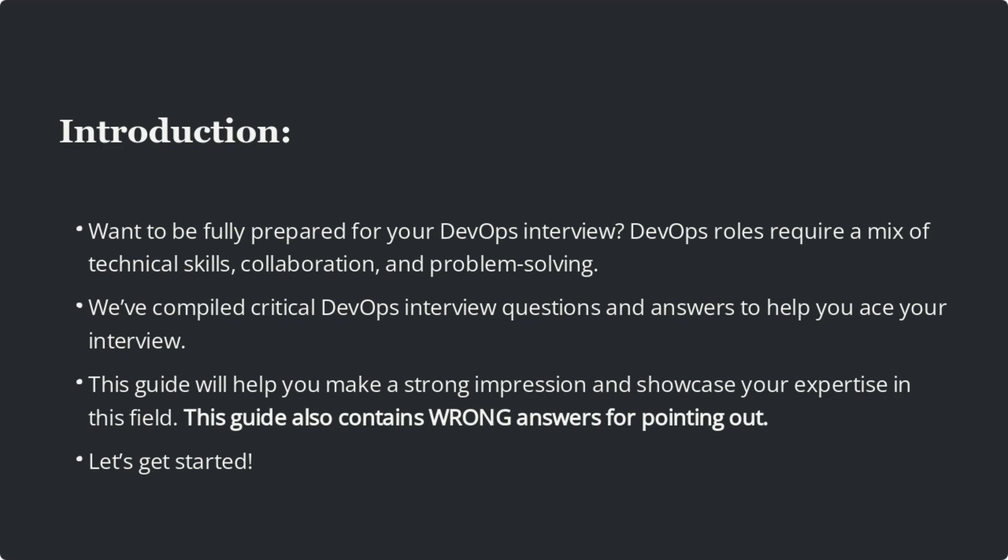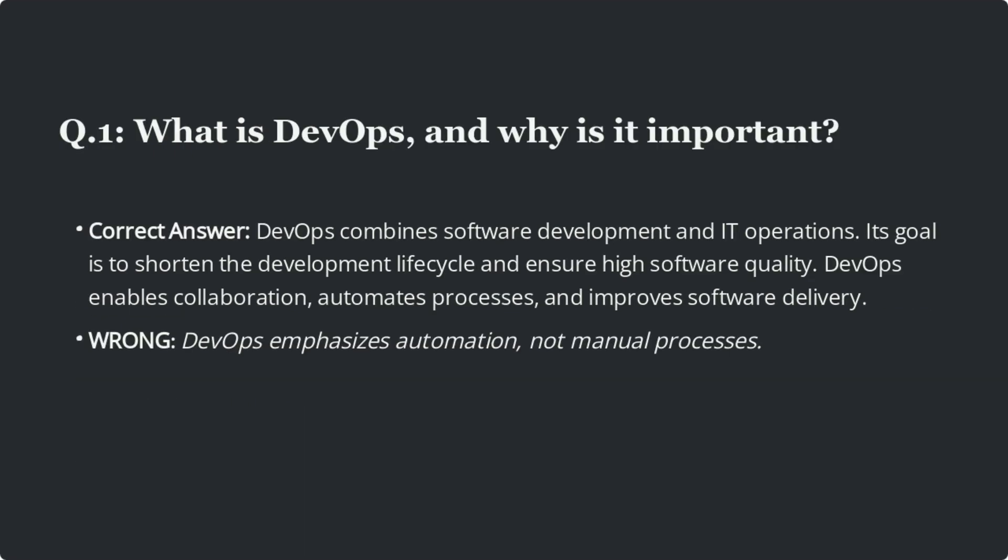This guide also contains wrong answers and some silly mistakes for pointing out. Question 1: What is DevOps and why is it important? The correct answer is DevOps combines software development and IT operations. Its goal is to shorten the development lifecycle and ensure high software quality. DevOps enables collaboration, automates processes, and improves software delivery.